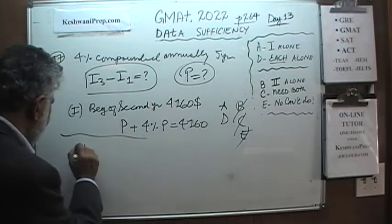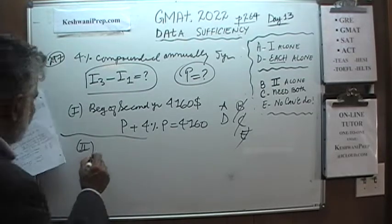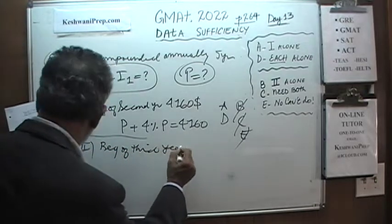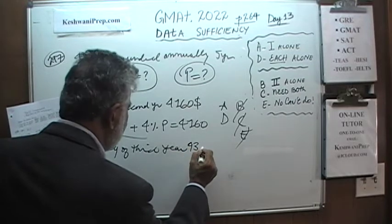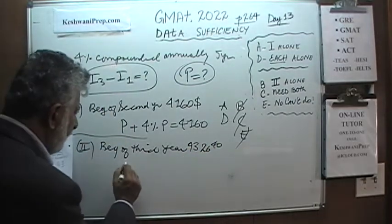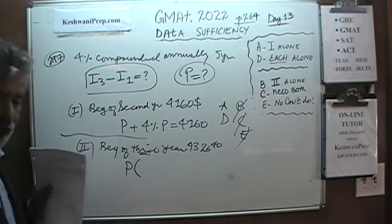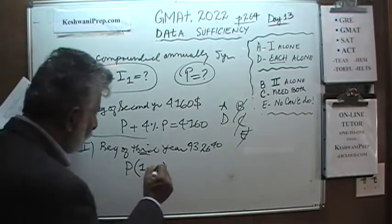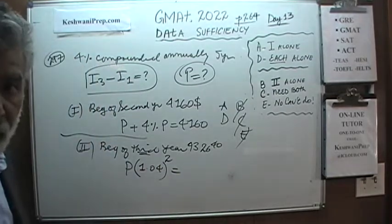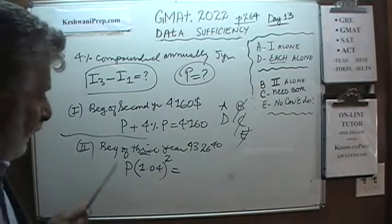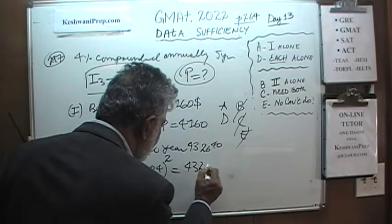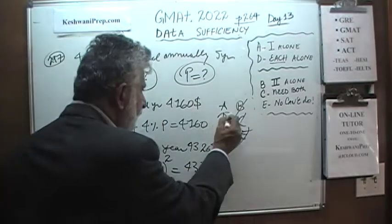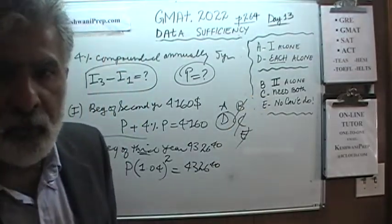The second statement tells us that at the beginning of the third year we had $4,326.40. This means P times 1.04 raised to the power of 2 equals $4,326.40, because the money has been in the account for two years. Again, we can solve for P and figure out the answer. The answer is D — each statement alone is enough to answer the question.